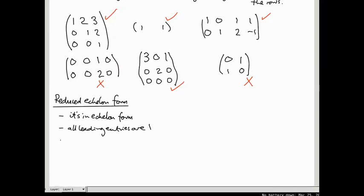And third, there's a slightly more involved condition. I'm going to call it condition star, which is in a column containing a leading entry, there are no other non-zero entries.